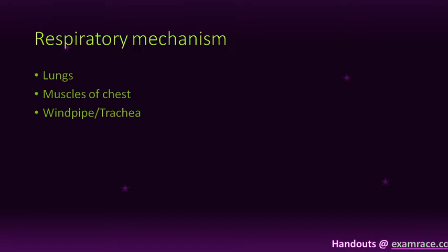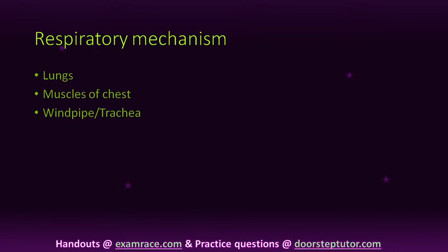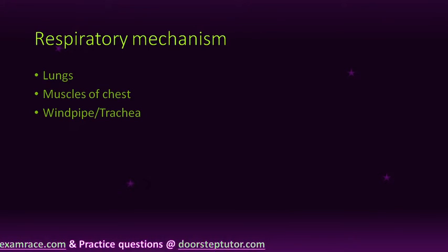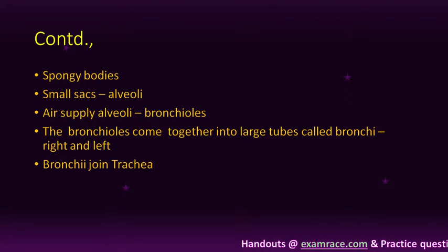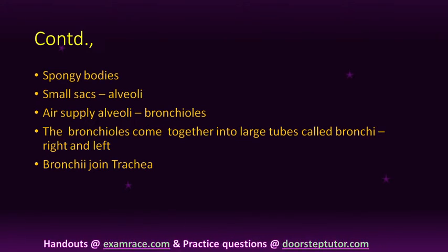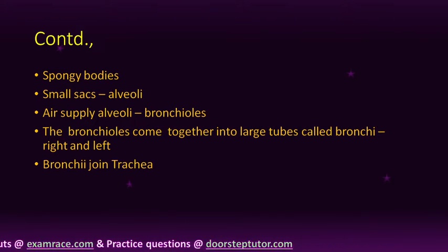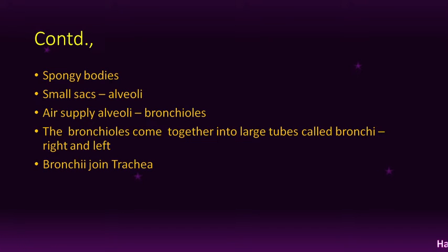Now we shall look into the Respiratory Mechanism. The respiratory system consists of Lungs, Muscles of Chest, and Windpipe — also called Trachea. The lungs are spongy bodies made up of small sacs called Alveoli. It is in these sacs that the blood is cleansed of its carbon dioxide and provided with fresh oxygen from the outer air — the basic thing we would have known from our science classes.